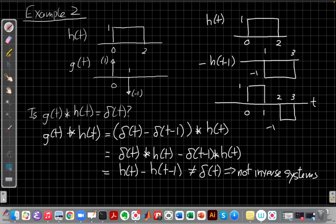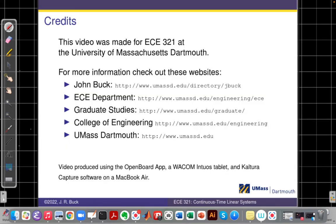So in this case, I don't have inverse systems, but because when I convolve the two things, I don't get an impulse back. So to wrap up, we saw in this video that two LTI systems are inverse systems of each other when convolving their impulse responses gives me the delta(t) back, just the unit impulse back.